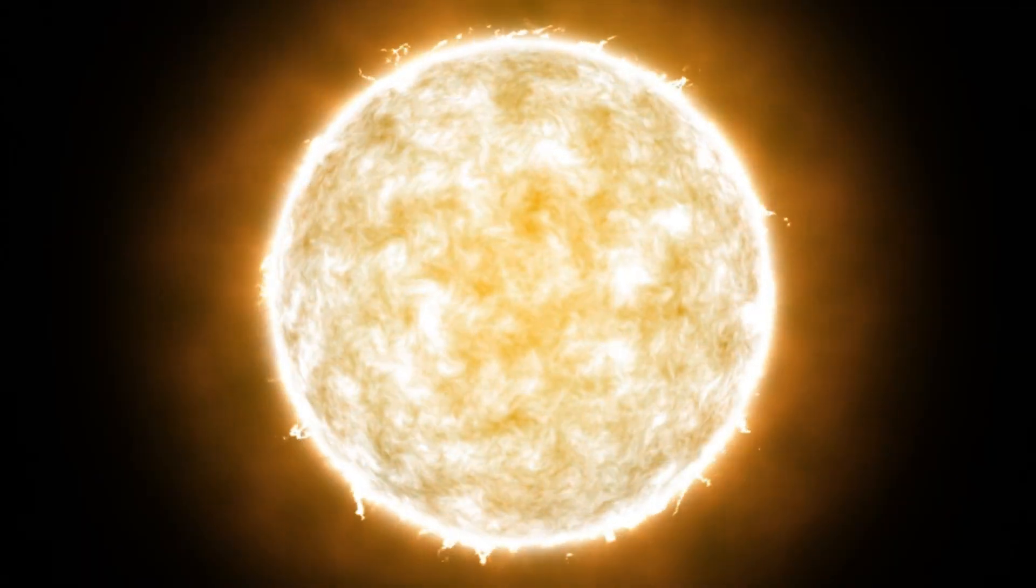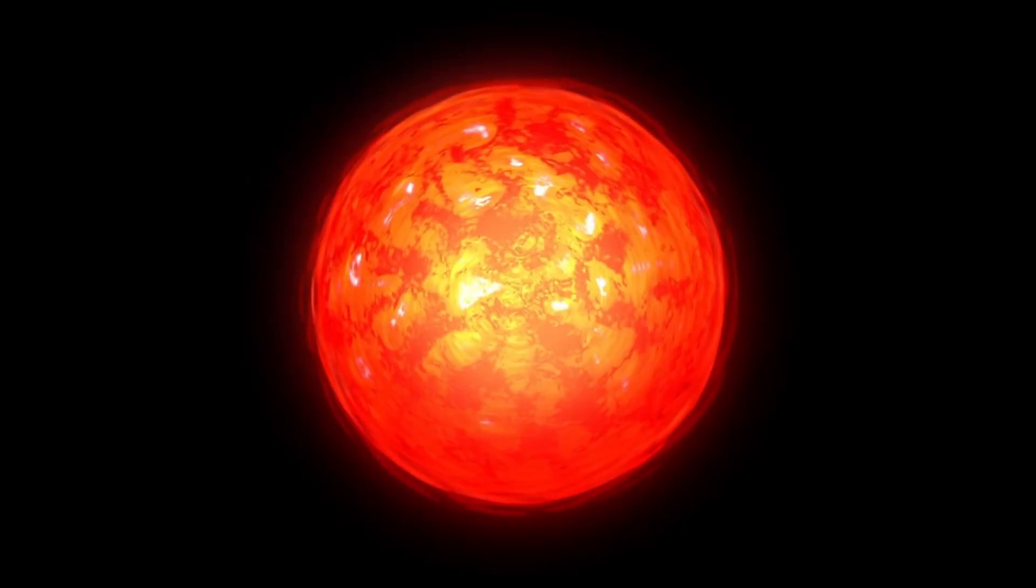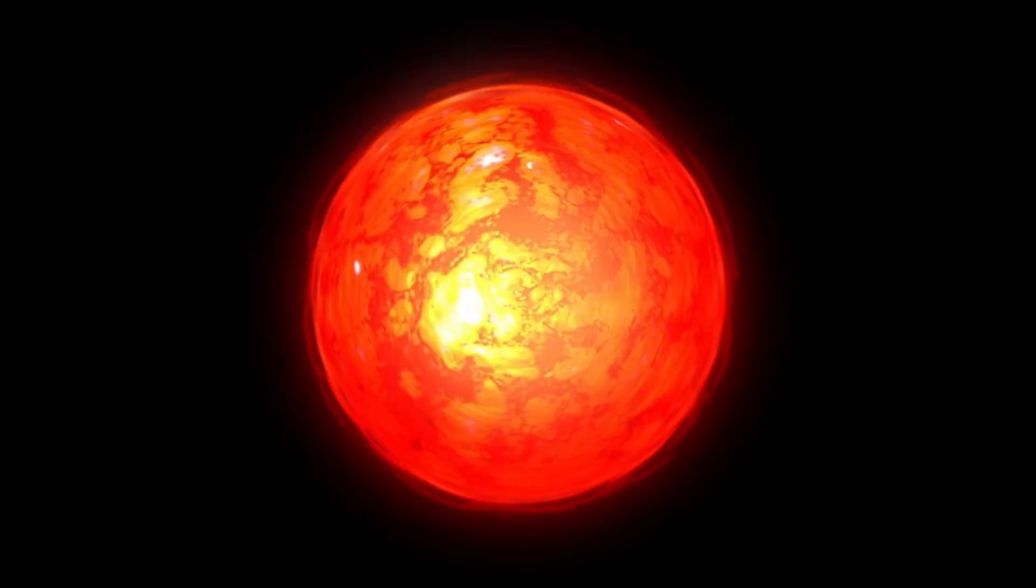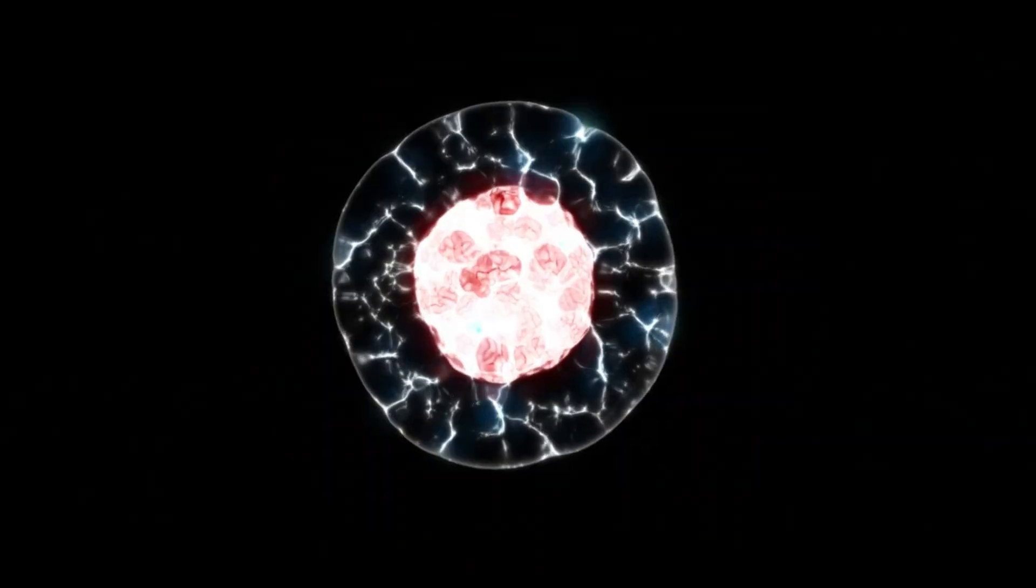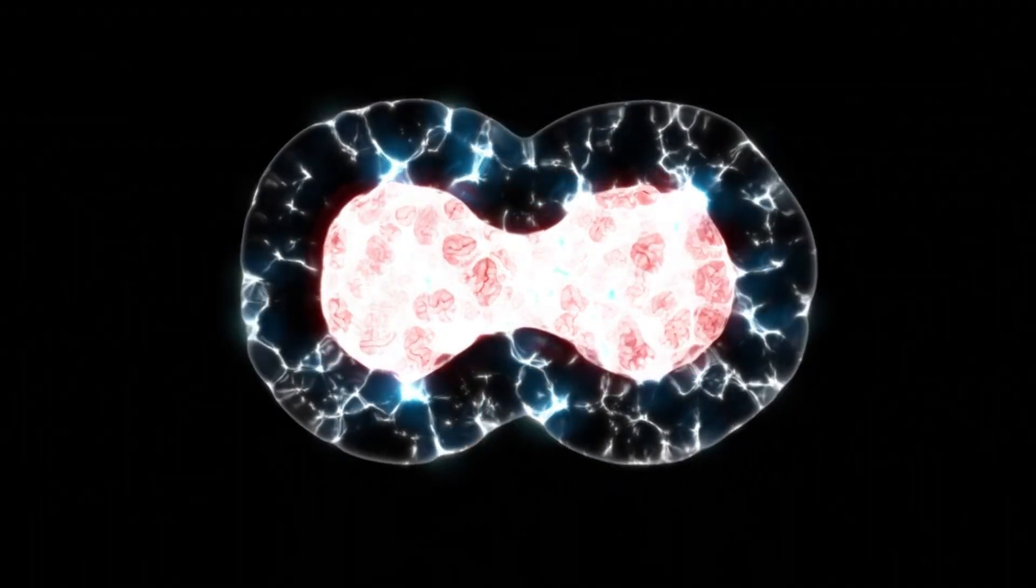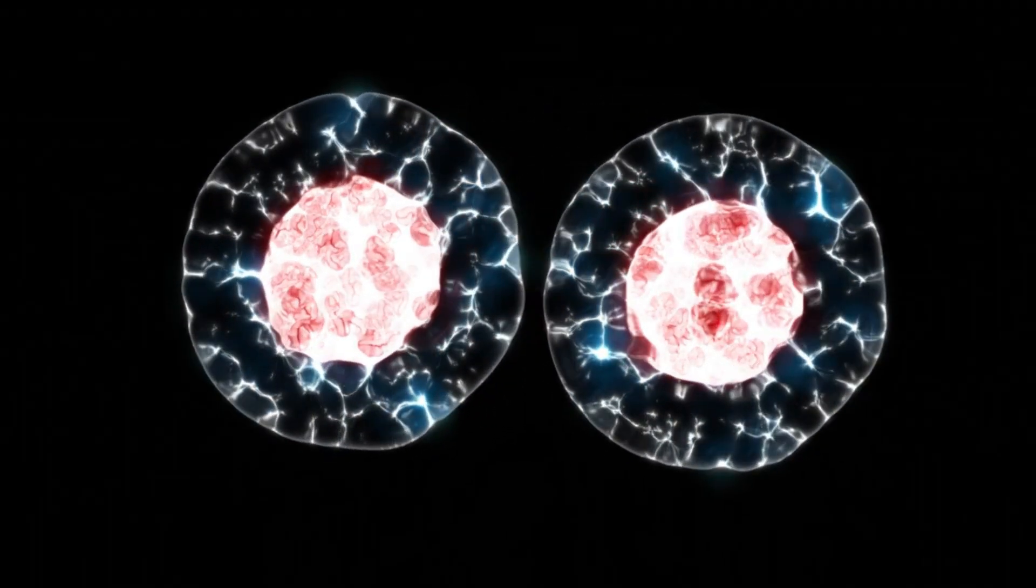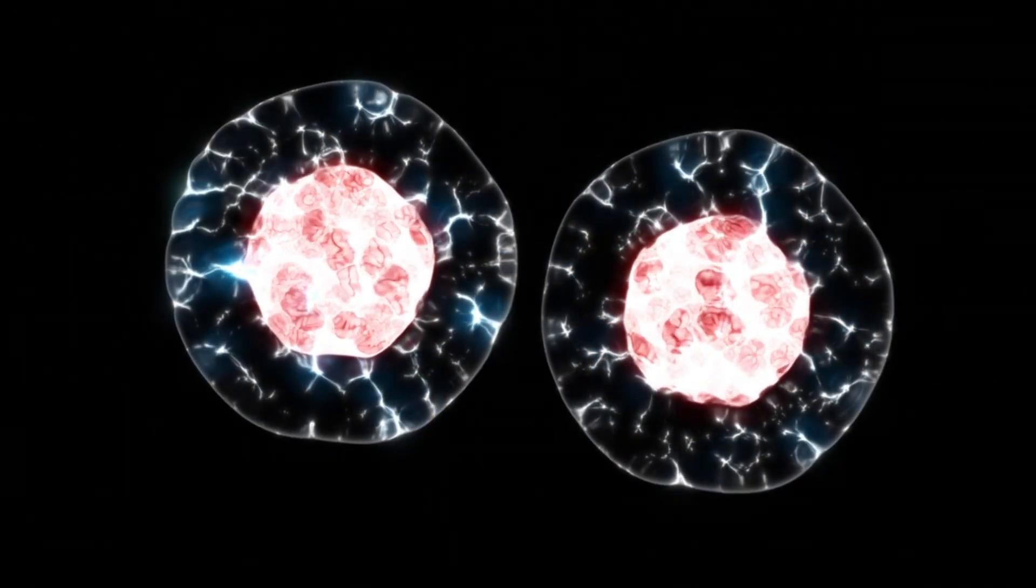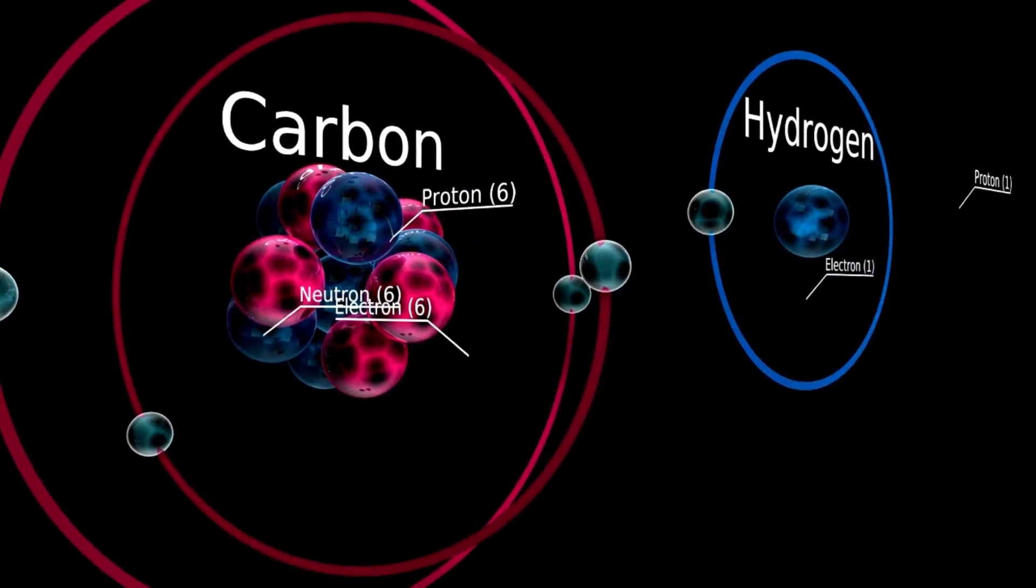One significant factor in Betelgeuse's irregular luminosity is convection, the rising of hot plasma from the star's interior and the sinking of cooler material. Betelgeuse's convective cells are thought to be enormous, possibly larger than Earth itself, and changes in these cells' efficiency and organization can cause dramatic and seemingly erratic shifts in brightness.